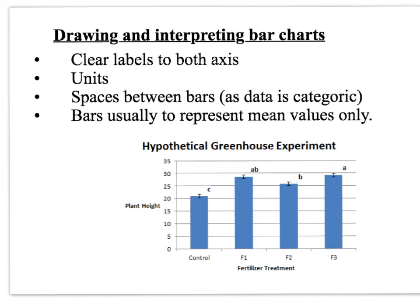Bar charts are probably the most simple. Again, rules for drawing graphs include clear labels. The easiest mistake is not labelling your x-axis — so include labels like 'fertilizer treatment' and 'plant height'. There will be a mark lost here because there are no units for plant height — we don't know if it's millimetres, centimetres, or metres. You must have spaces between bars because the data is categoric and the bars are separate things. The bars usually represent the mean value calculated from several repeats. With bar charts, you can include standard deviation bars, which allow you to see if the difference is significant — if the top of one bar does not overlap with the bottom of another, the difference is significant.